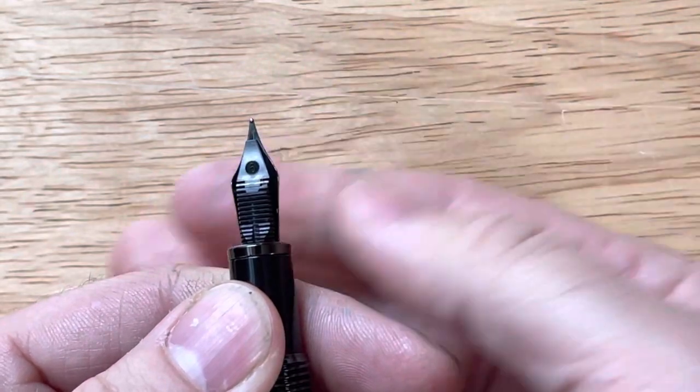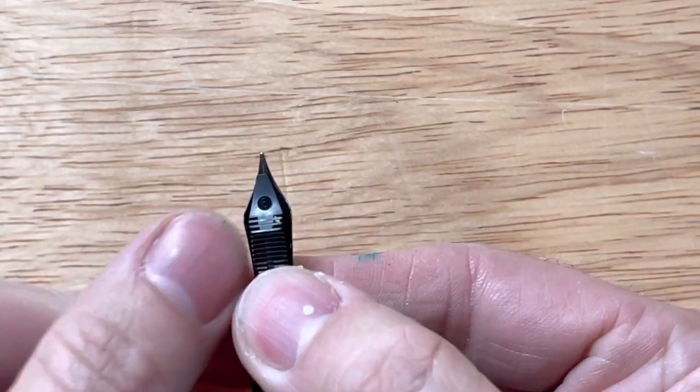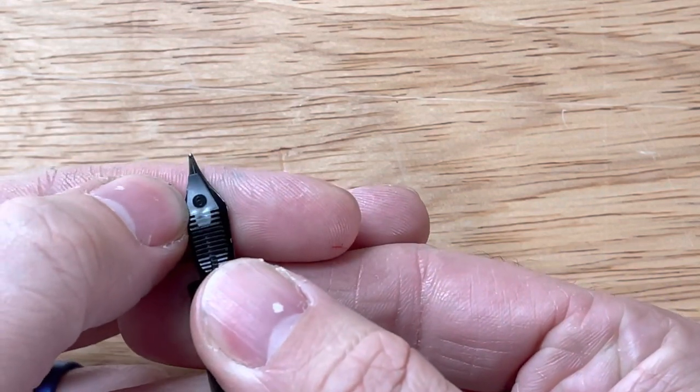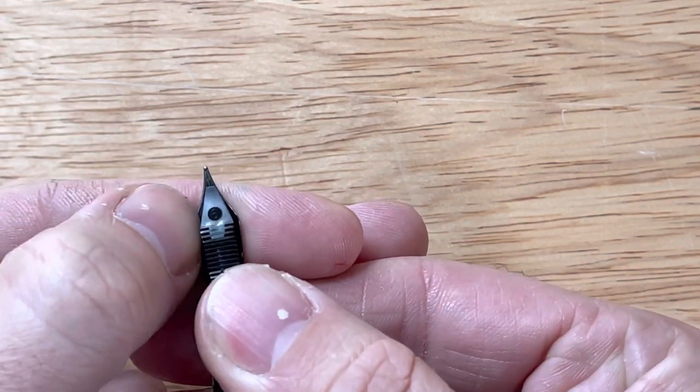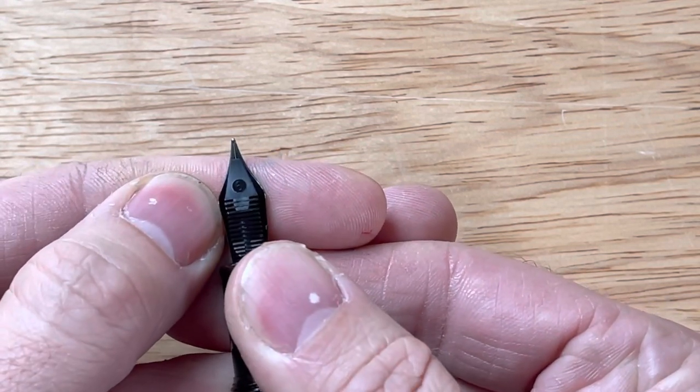It doesn't necessarily mean that the pen is faulty or anything. I'm going to show you why, but if you do want to line it back up, it's pretty simple. You basically just can use your fingernail even and you just kind of push it back. These things are friction fit in there and then it's lined up again.